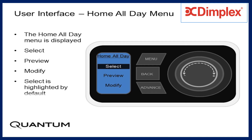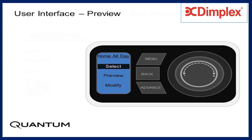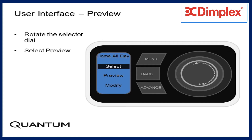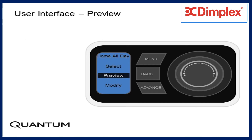Select is highlighted by default. Rotate the selector dial and select Preview, then press the selector dial.